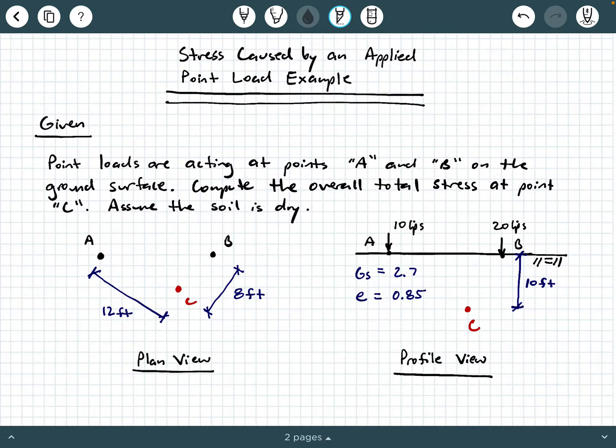It says that point loads are acting at points A and B, which are on the ground surface. And then the problem is asking us to compute the overall total stress at point C and assume the soil is dry. So let's take a look at the given figure. In this left figure, we have a plan view.